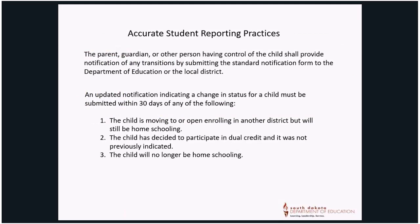An updated notification indicating a change in status for a child must be submitted within 30 days of any of the following: 1. The child is moving to or open enrolling in another district but will still be homeschooling. 2. The child has decided to participate in Dual Credit and it was not previously indicated. 3. The child will no longer be homeschooling.